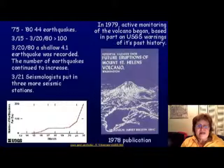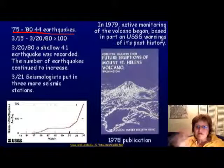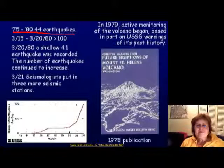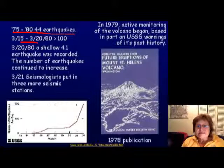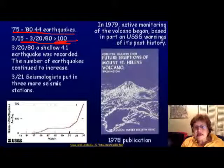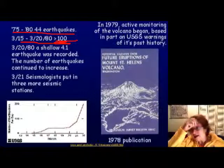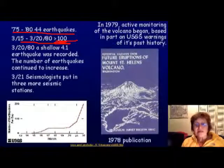Between 1975 and 1980 there were 44 earthquakes in five years. But between March 15th and March 20th, 1980, there were more than 100 earthquakes in just five days — the volcano was clearly signaling that something was happening.